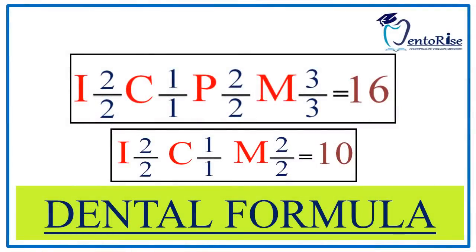The denomination and number of all mammalian teeth are expressed by a formula that is used to differentiate the human dentitions from those of other species. In this video, we will be dealing with how a dental formula is written.